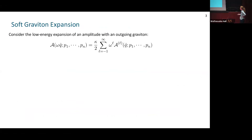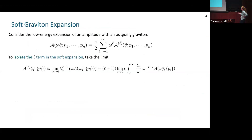Let's look at the expansion of an amplitude with a graviton we're taking to be soft. We have our amplitude with an outgoing positive helicity graviton, expanded at tree level as a power series in omega, where the leading term is the Weinberg pole at omega-to-the-minus-one. To isolate the l-th term, we take different derivatives in omega and take omega to zero, which is equivalent by a delta function identity to a limit as epsilon goes to zero of epsilon multiplying the Mellin transform of the amplitude with omega-to-the-minus-l-plus-epsilon.